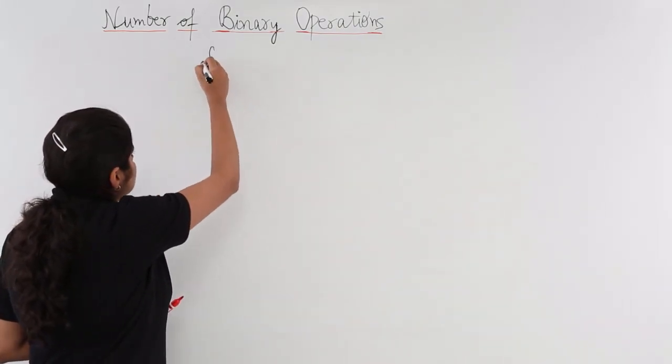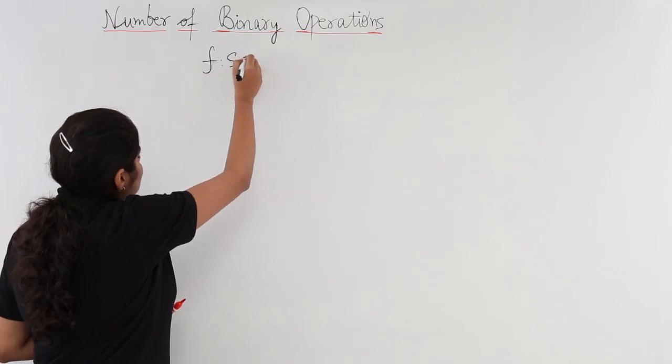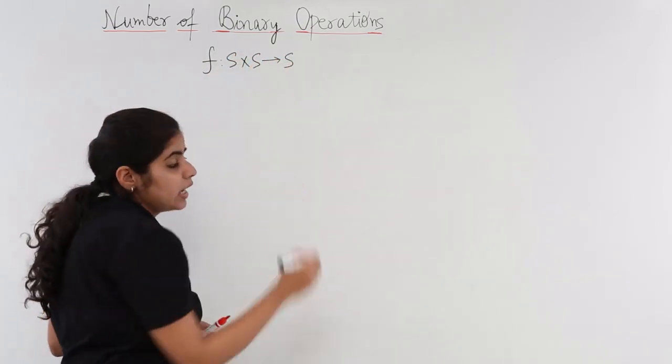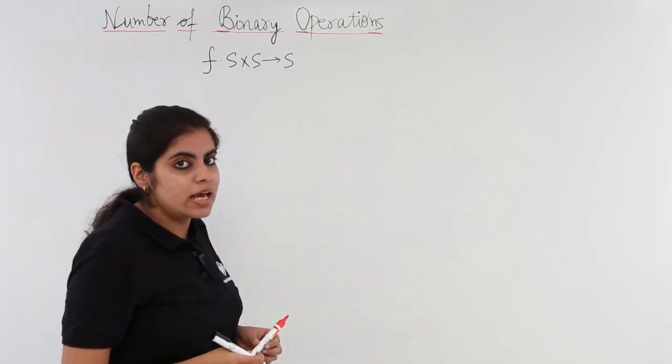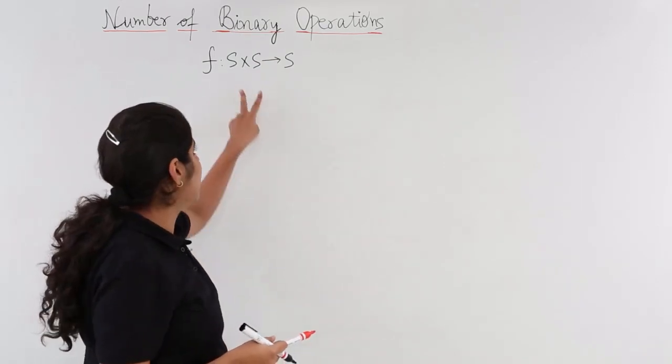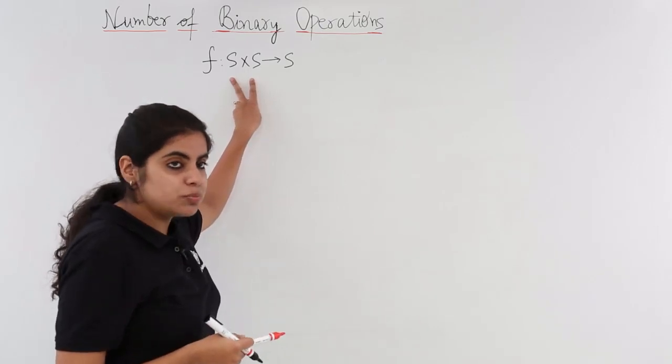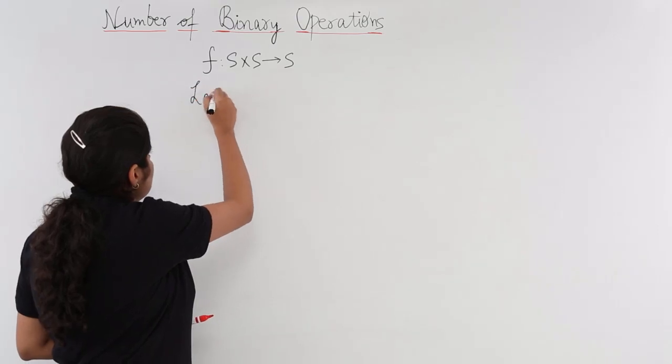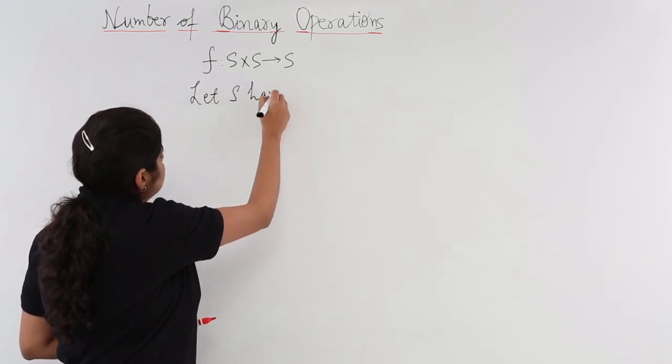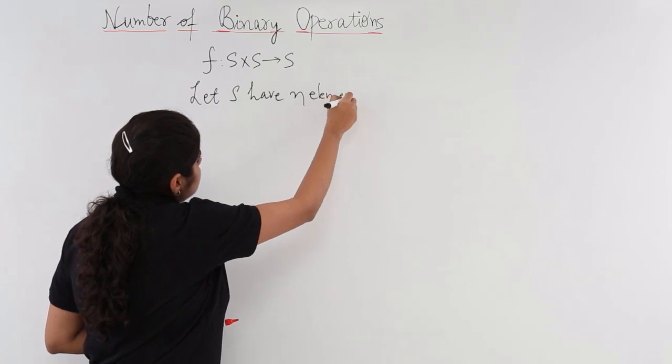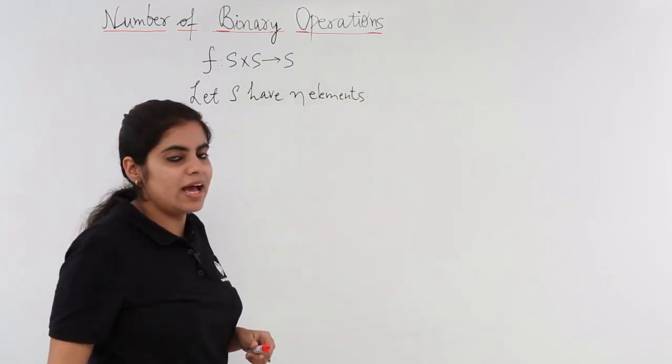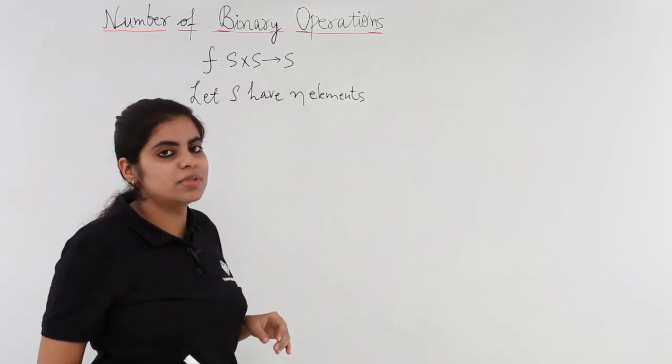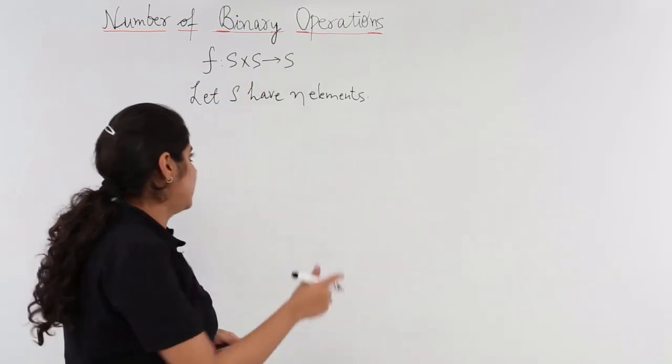Suppose I have a function given, and the function is such that it is named as f and the binary operation is there, so we will have two elements, Cartesian product giving one. Now let S have n elements. S cross S, that means the Cartesian product, so it means n and n multiplied.